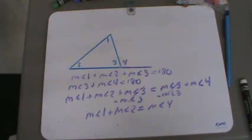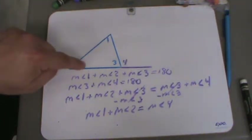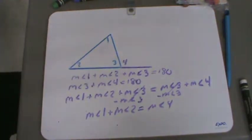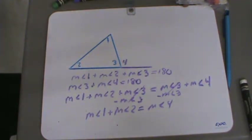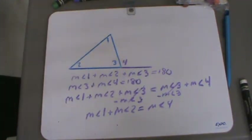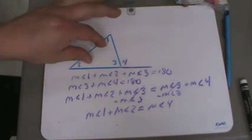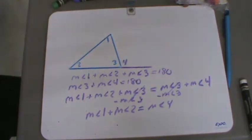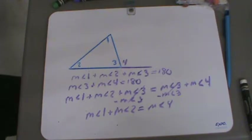What does this mean? Well, these two angles are opposite of the extended line there. This angle out here is called an exterior angle — it's outside of the triangle. We just learned that these two angles, the ones that are opposite of that exterior angle, are going to add up to give me that exterior angle.